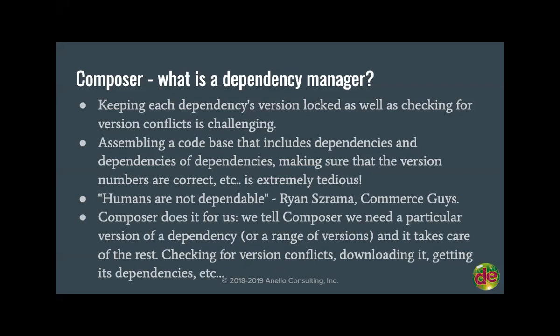This is where Composer comes in — these are the problems Composer solves. We tell Composer we need a particular range of versions, like 'version 5.x of that dependency.' Composer does everything else: it gets the latest compatible version, makes sure it doesn't conflict with other dependencies, and checks whether we already have it as a sub-dependency. You can imagine Drupal core with 30 dependencies — that dependency tree gets very deep, and that's not something we want to manage manually.